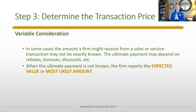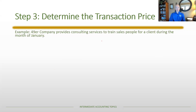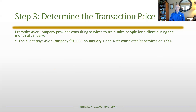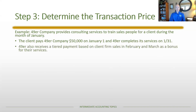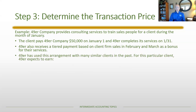There is judgment in choosing which method to use. Let's look at an example: a company provides consulting services to train salespeople for a client, is paid $50,000 on January 1st, and completes the services on January 31st. They also receive a tiered bonus based on the client's sales in February and March. Based on past experience, they estimate a 55% chance of a $10,000 bonus, a 35% chance of $5,000, and a 10% chance of $1,000.